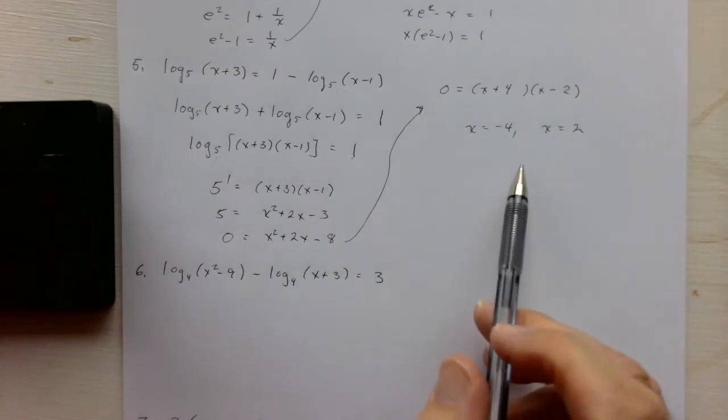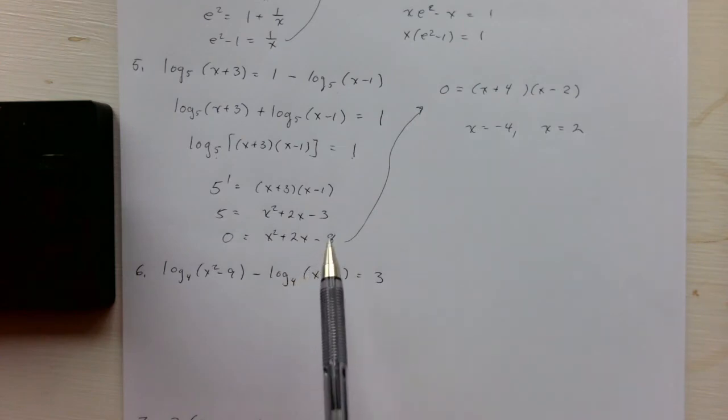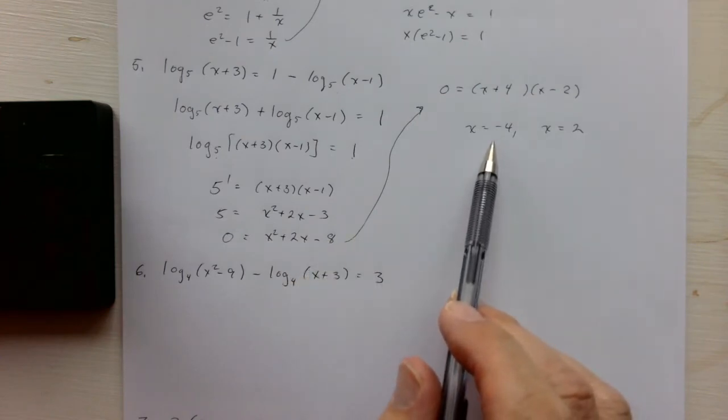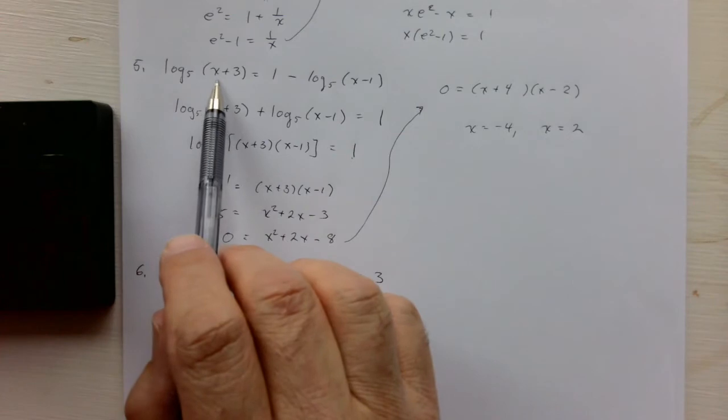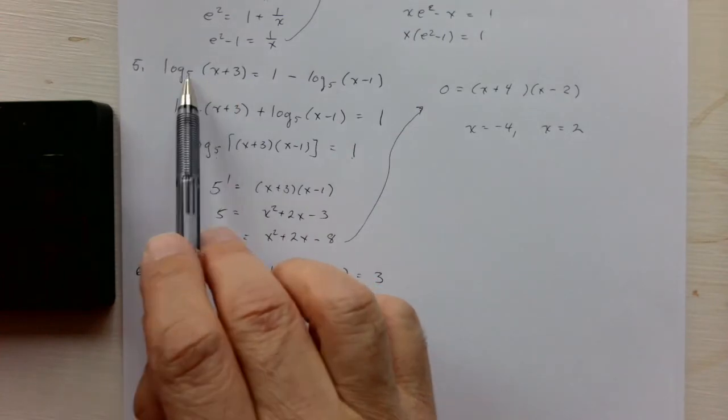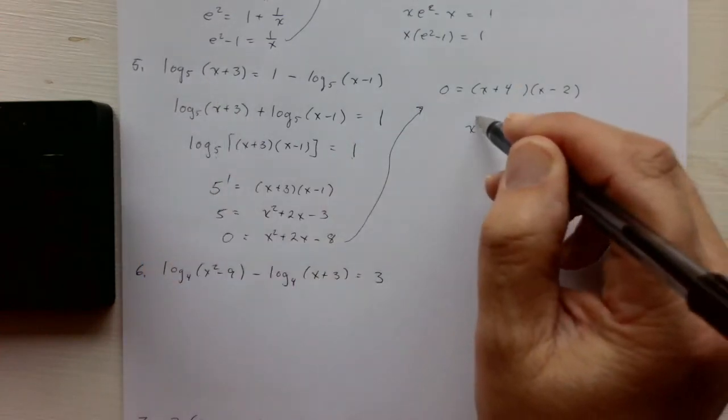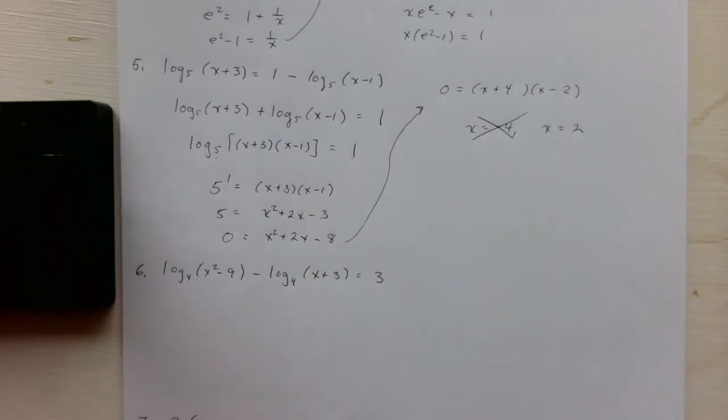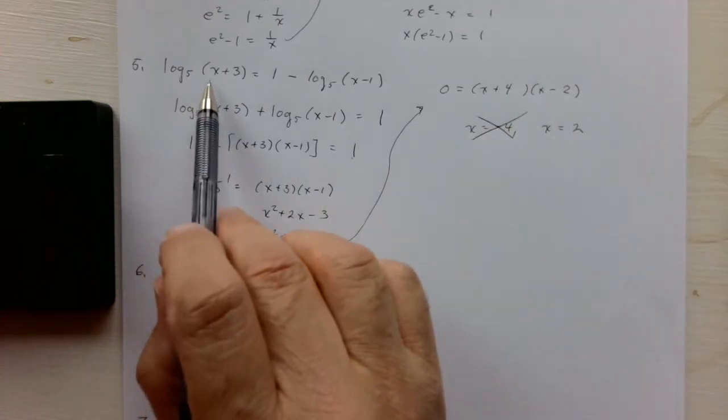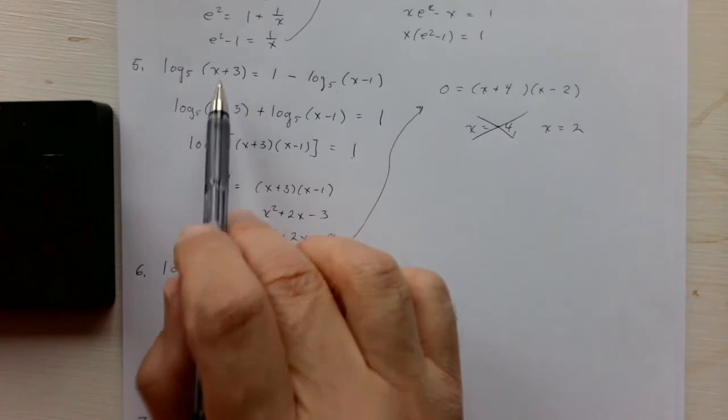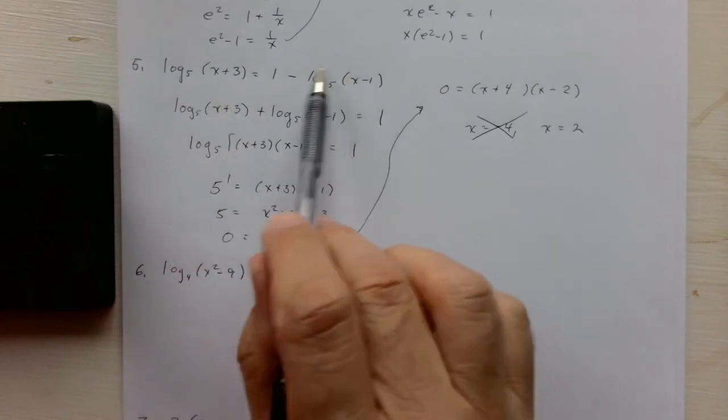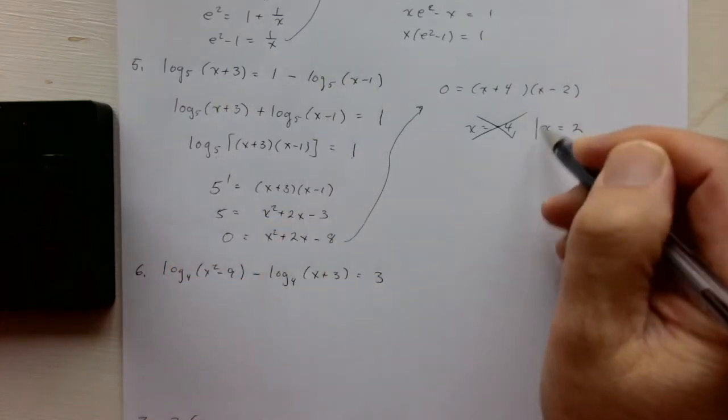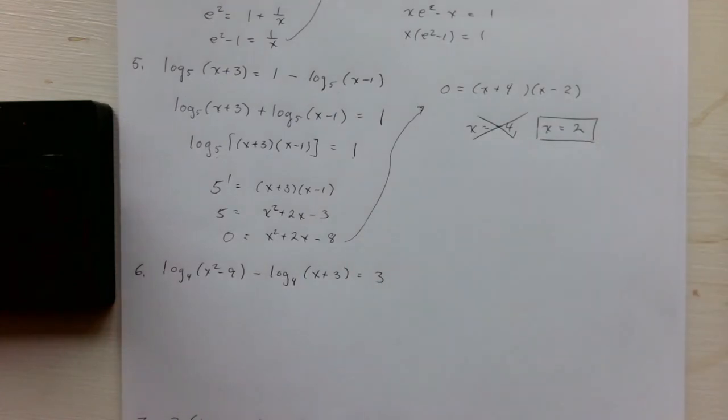But again, we have to check that this works. And when we try to plug in negative 4, negative 4 plus 3, that's negative 1, so this will be undefined. So we can't include negative 4. If we plug 2 in here, we get log of 5 base 5, that's 1. If we plug 2 in here, this is 0. So x equals 2 will be the only solution.